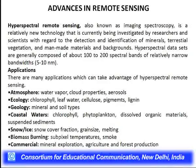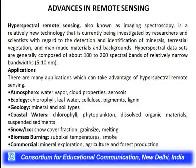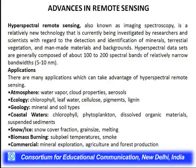Hyperspectral remote sensing, also known as imaging spectroscopy, is a relatively new technology being investigated by researchers and scientists for the detection and identification of minerals, terrestrial vegetation, and man-made materials. Hyperspectral datasets are generally composed of about 100 to 200 spectral bands, with vast applications spanning the atmosphere — including water vapor study, cloud properties, aerosol study — and ecology, including chlorophyll and leaf water content.